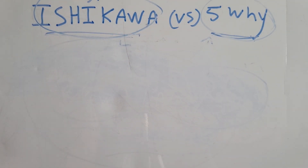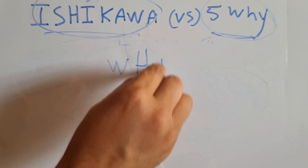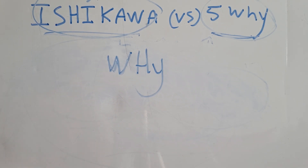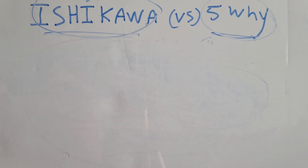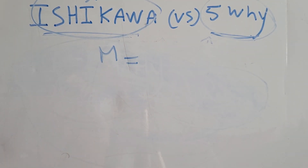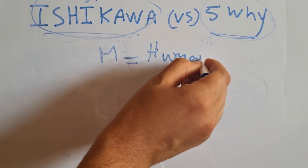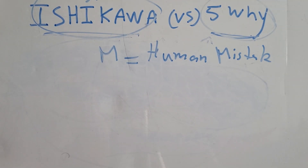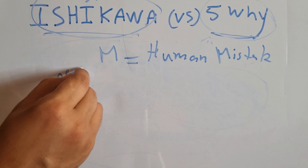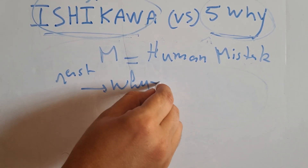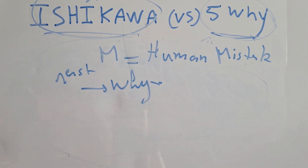In the 5 Whys, we take all the relevant potential causes from Ishikawa and start to ask the question 'why.' For every relevant potential root cause, we ask why this is the root cause, and the answer itself becomes the basis for asking why again.